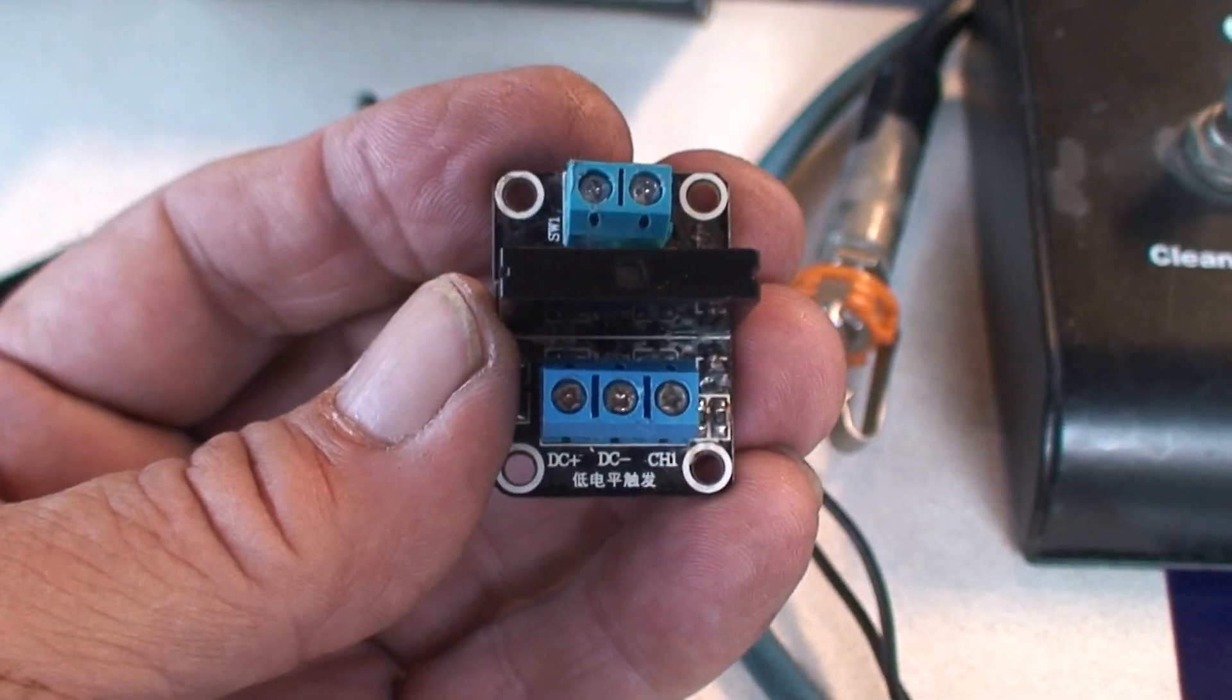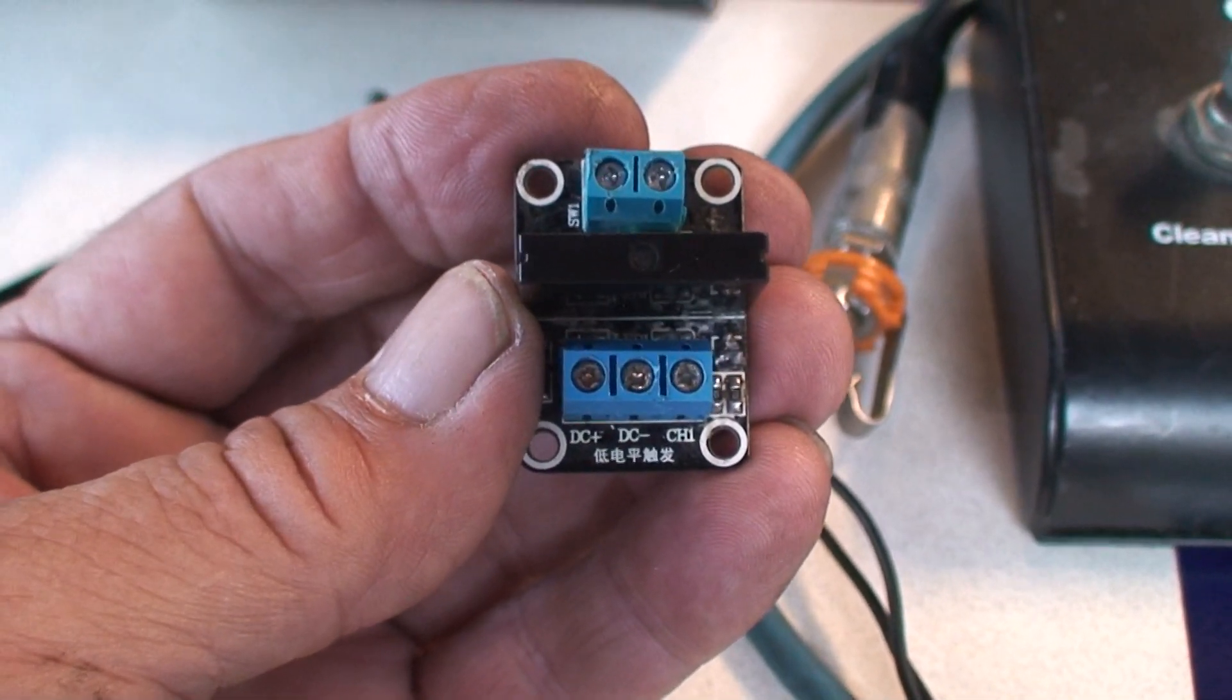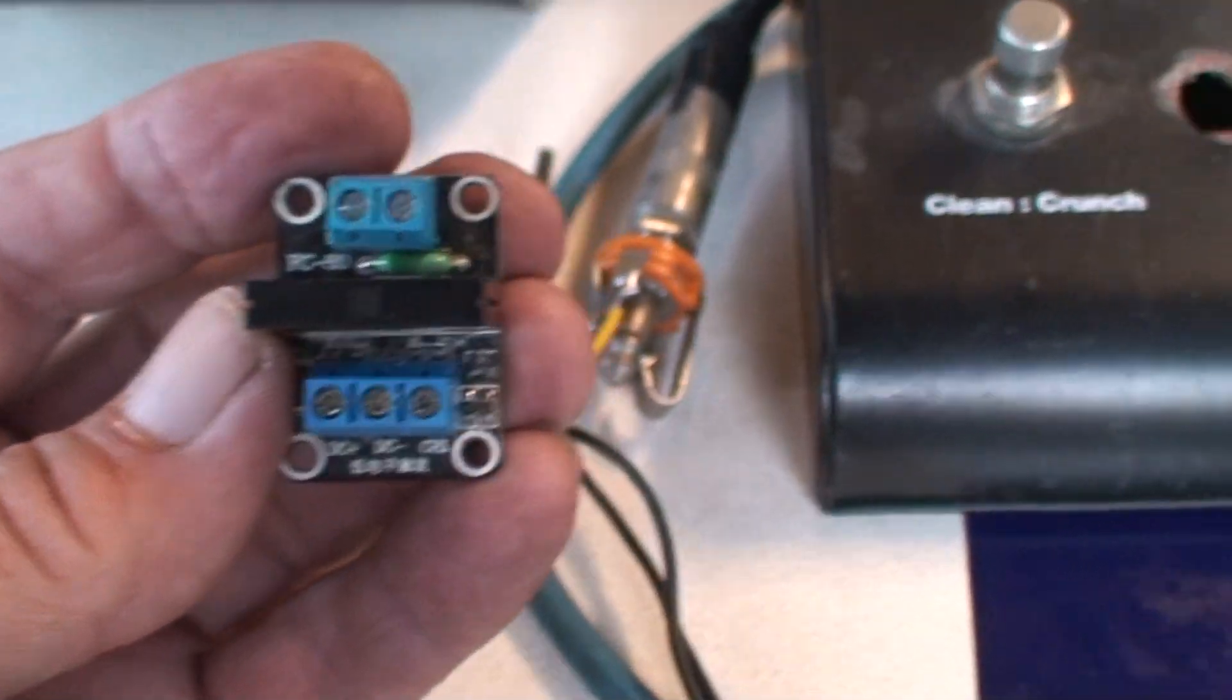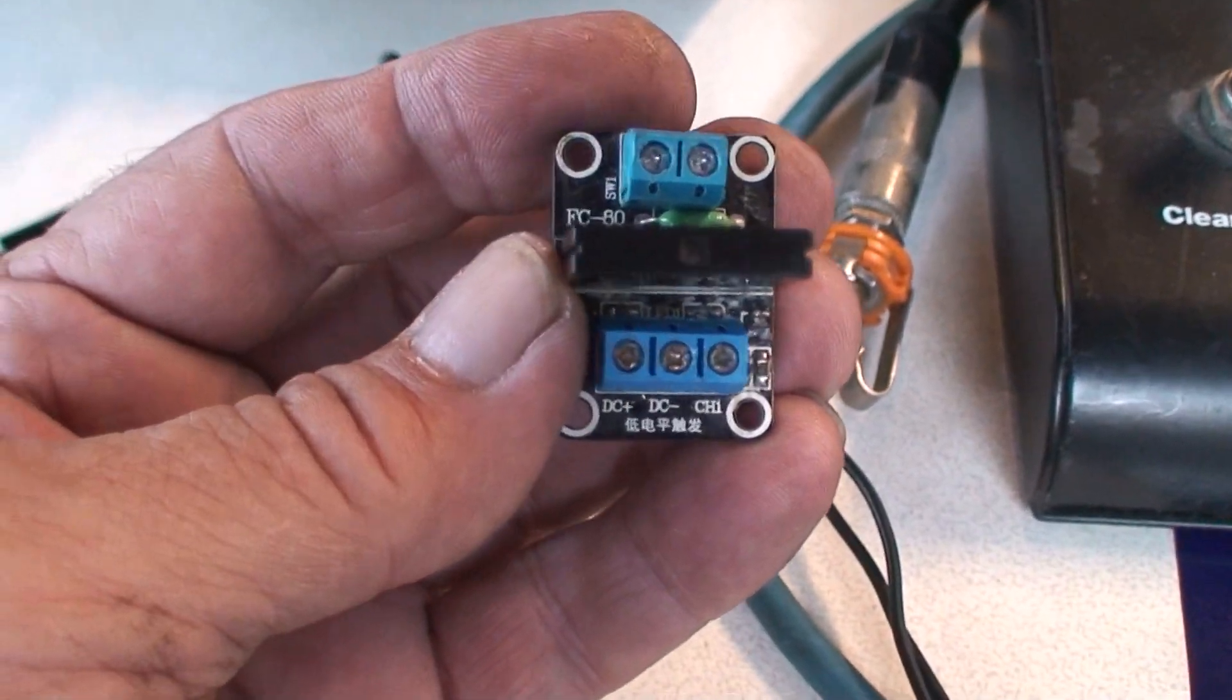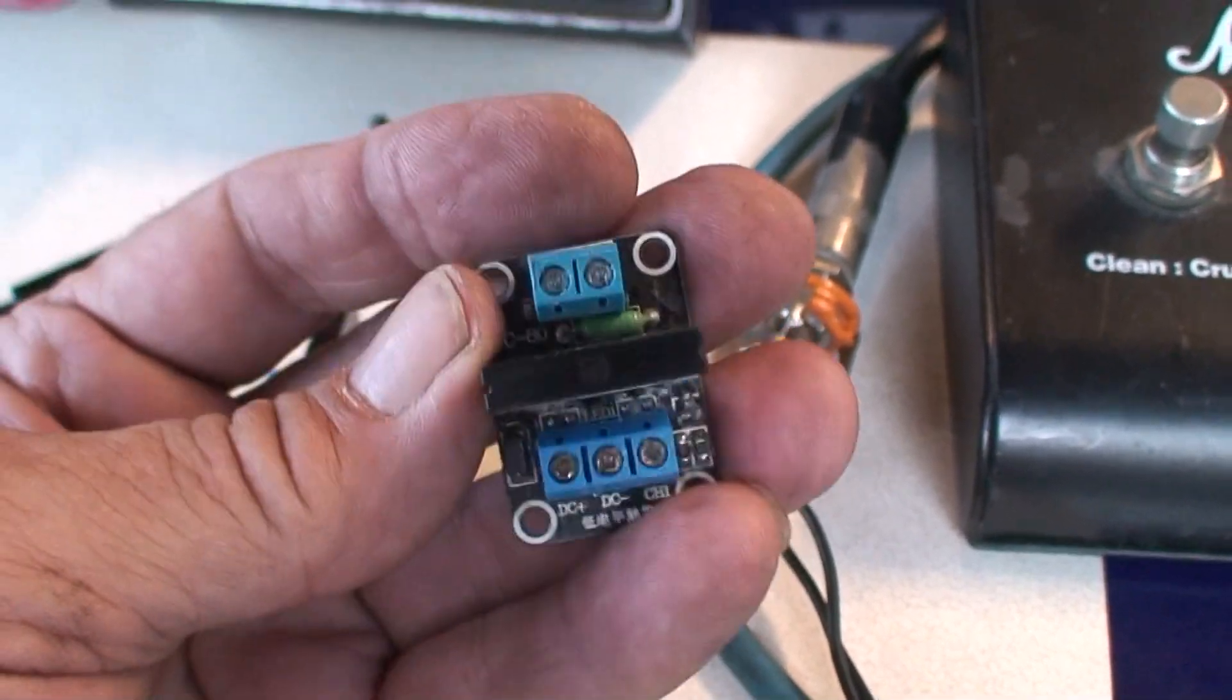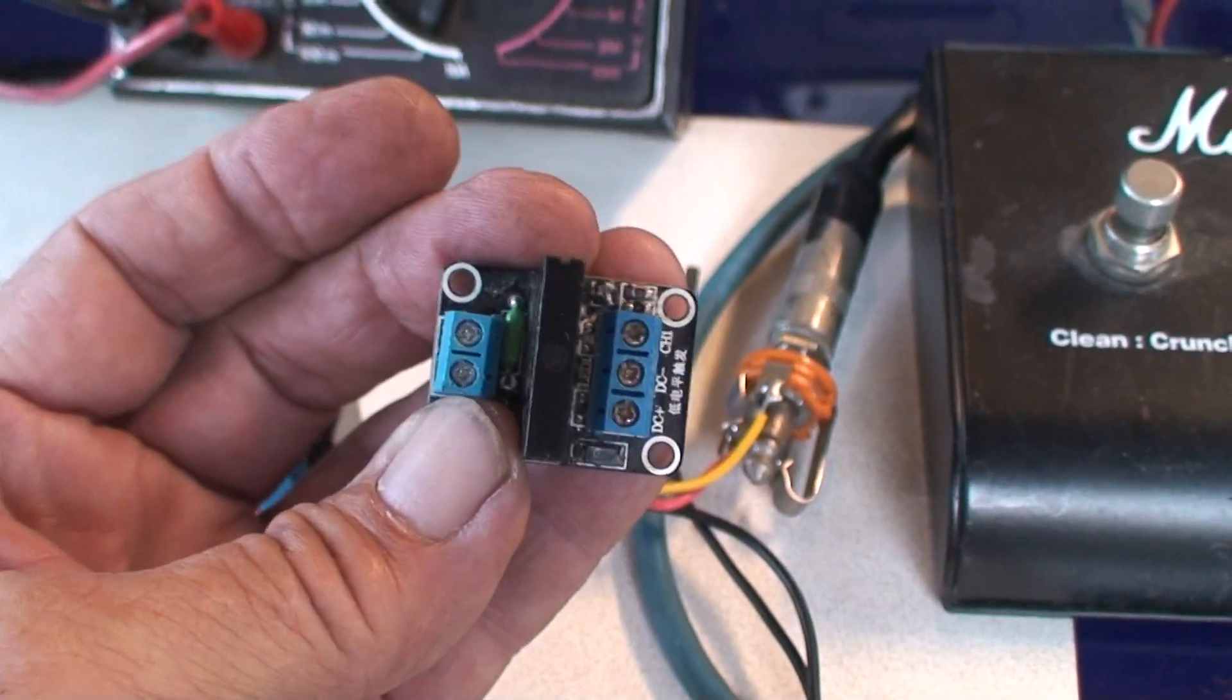I bought these because I had a little project - I wanted to control a Hammond organ Leslie speaker with 12 volts using a foot switch. I've used solid-state relays before; this is probably the fifth or sixth setup I've done. I bought this solid-state relay package because it's a neat little package, two dollars online from eBay.